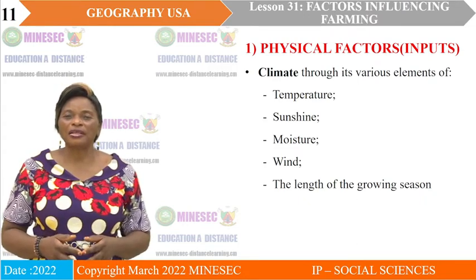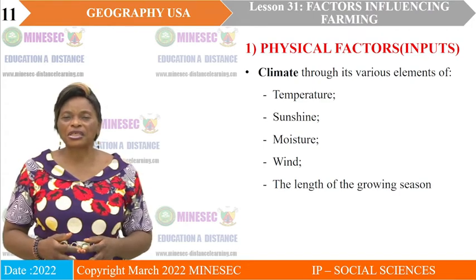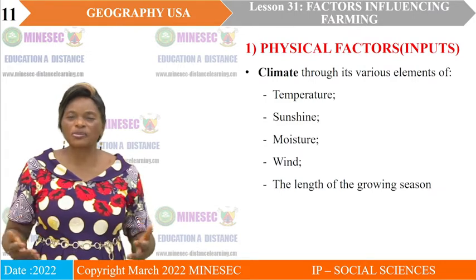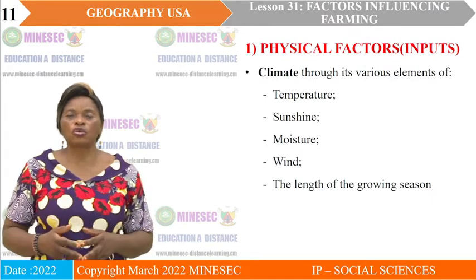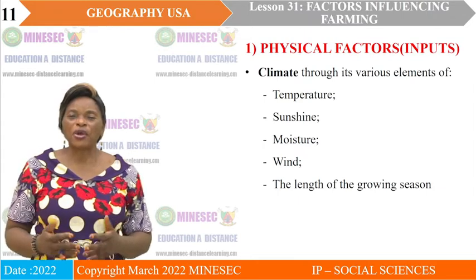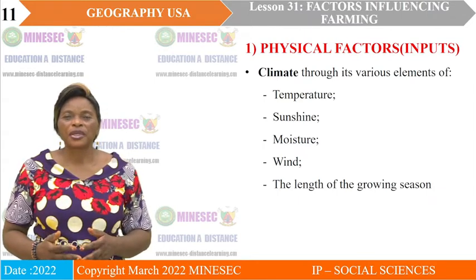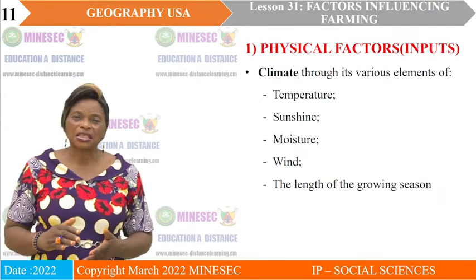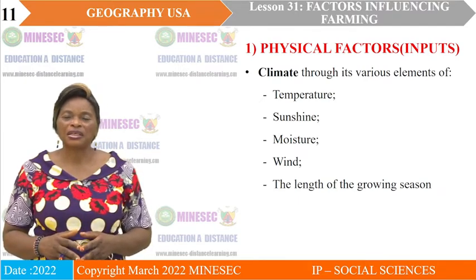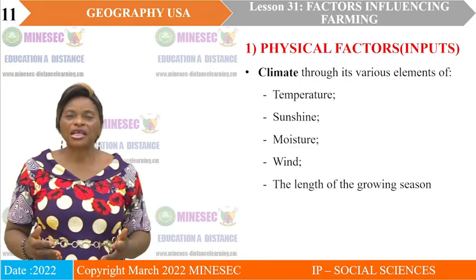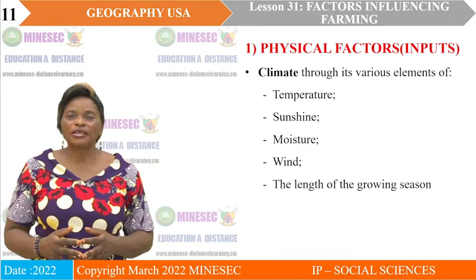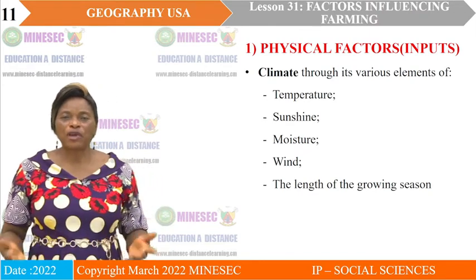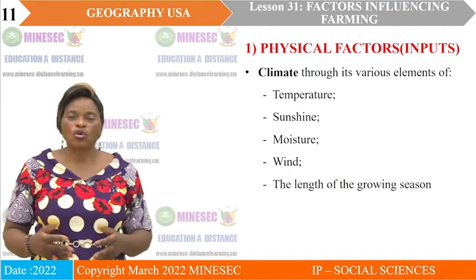Secondly, there is sunshine. Sunshine is also very important because crops generally need sunshine to grow. Where cereals are grown, they need abundant rainfall, and when they are getting to maturity they need sunshine so that the grains can ripen. Sunshine is very important as it helps crops especially to ripen and grow well.